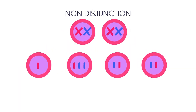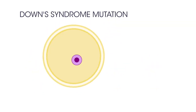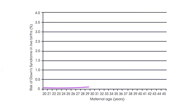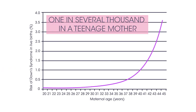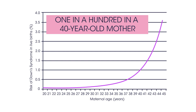Non-disjunction does occur with other chromosomes, but these usually result in miscarriage. This is less likely to happen with the 21st chromosome because it is relatively small. The Down's syndrome mutation appears to occur in the production of ova rather than sperm, and its incidence increases with the age of the mother. The chance increases from approximately one in several thousand in a teenage mother to one in a hundred in a 40-year-old mother.